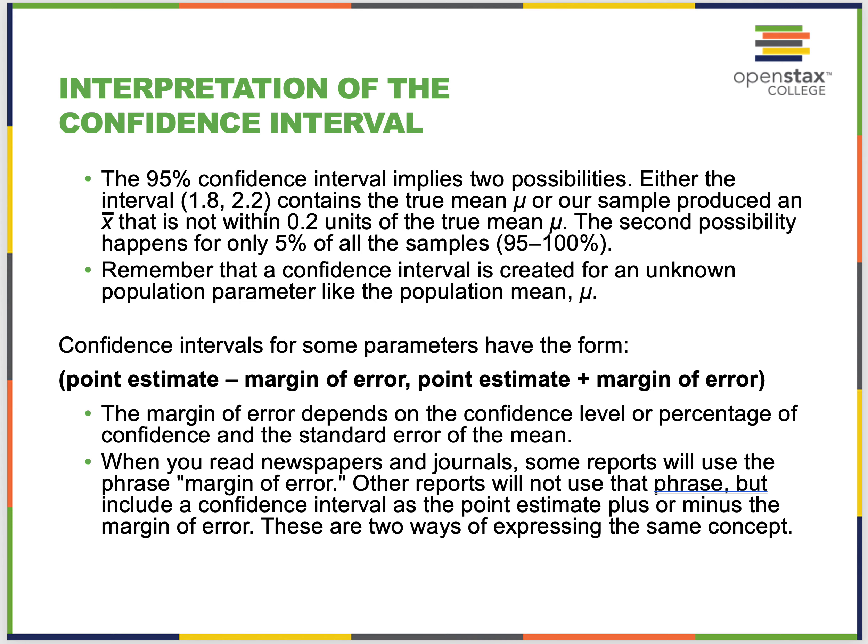Confidence intervals have the form: point estimate minus margin of error to point estimate plus margin of error. The margin of error depends on the confidence level and the standard error of the mean, which is sigma divided by the square root of n. When you read newspapers and journals, some reports use the phrase 'margin of error,' while others express it as point estimate plus or minus margin of error — these are two ways of expressing the same concept.